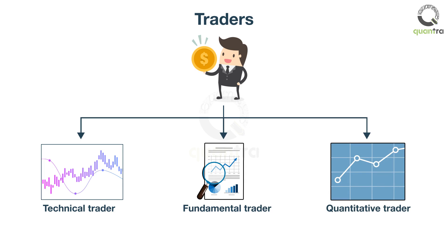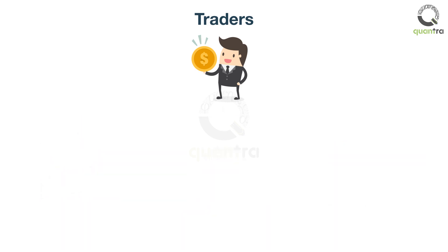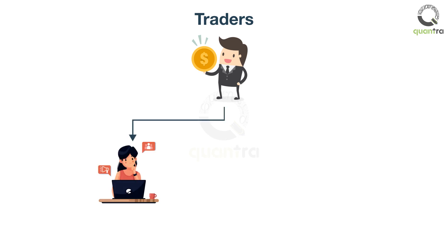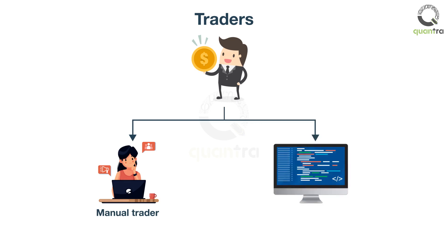Traders can also be classified based on how they carry out their trades. A trader punching trades manually is referred to as a manual or discretionary trader. And a trader using sophisticated tools to trade in an automated fashion is known as an algorithmic trader.